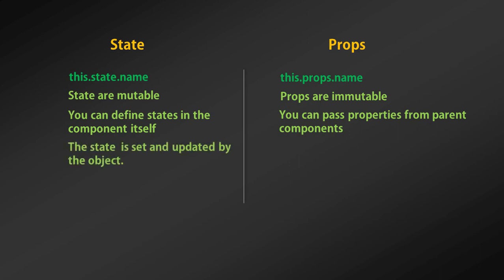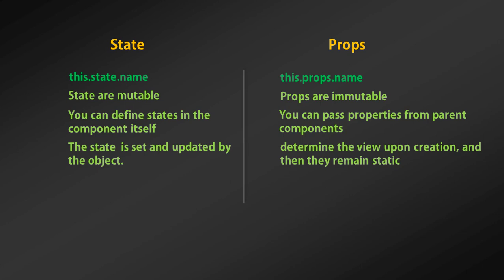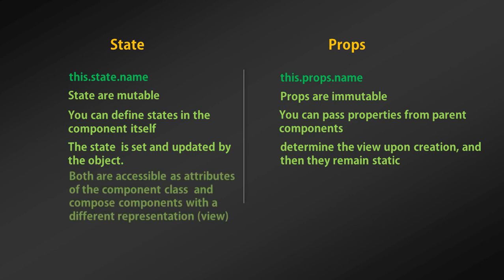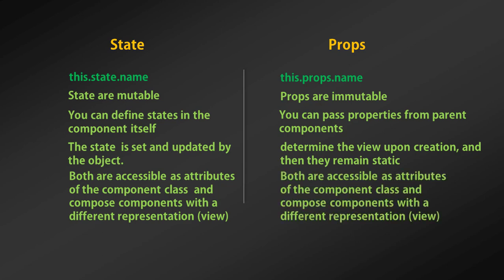Properties determine the view upon creation and then remain static — they don't change. State, on the other hand, is set and updated by the component itself. Both properties and state serve different purposes, but both are accessible as attributes of the component class and both help you compose components with different representations, or views.